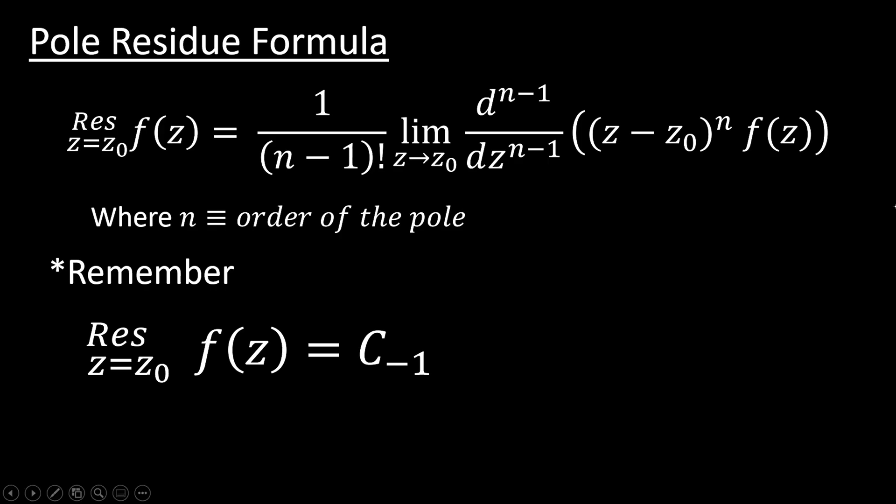First, we need to be able to identify the order of the pole. So if, let's say, we have the following function here, one on z plus one, this is a pole of order one. Let's say we have one on z plus one quantity squared. Well, that's a pole of order two, and we're going to need to be able to identify that.